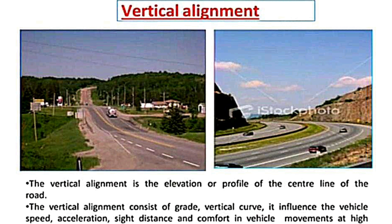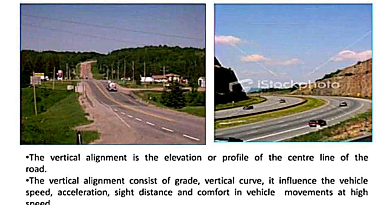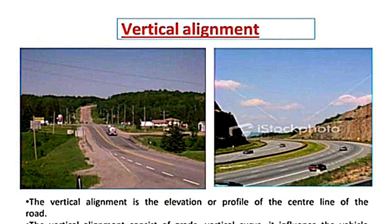In this vertical alignment, it consists of the grade, vertical curves, speed, acceleration, sight distance, comfort, high speed, movement, etc. These are the factors that make up the vertical alignment.